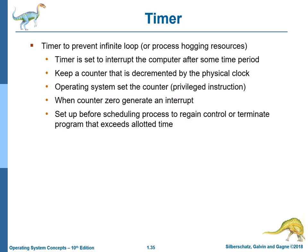Timer: a timer is used to prevent infinite loops or a process hogging resources. The timer is set to interrupt the computer after some time period and keeps a counter that is decremented by the physical clock. The operating system sets the counter as a privileged instruction. When the counter reaches zero, an interrupt is generated. The timer is set up before scheduling a process to regain control or terminate a program that exceeds its allotted time.